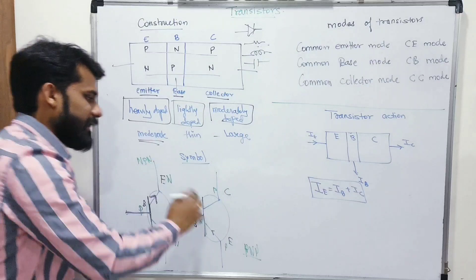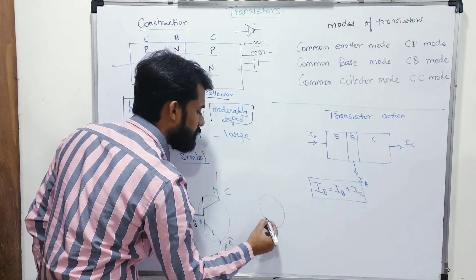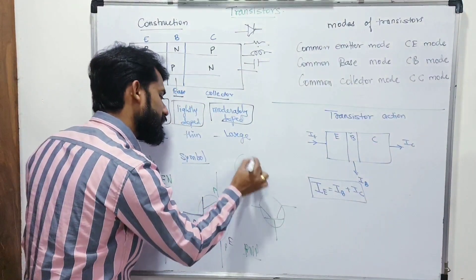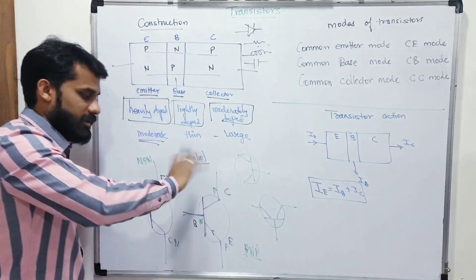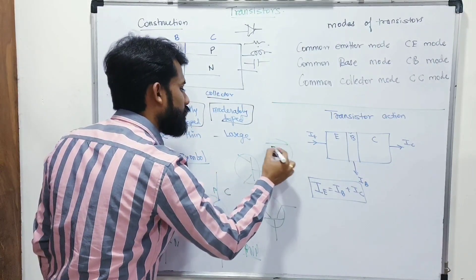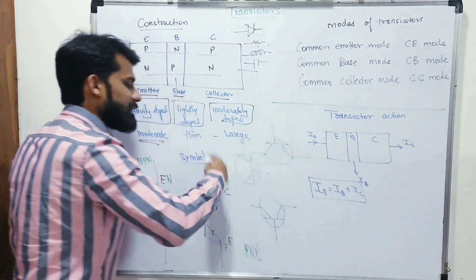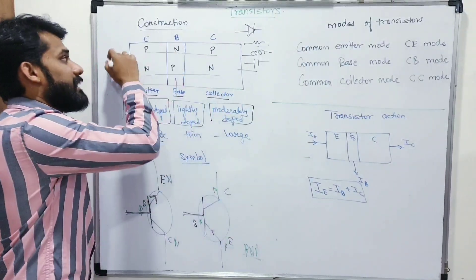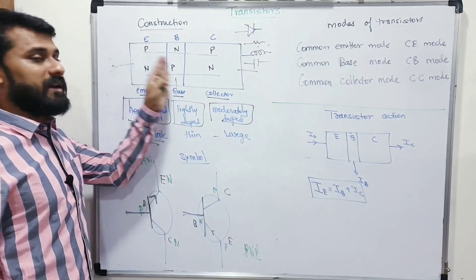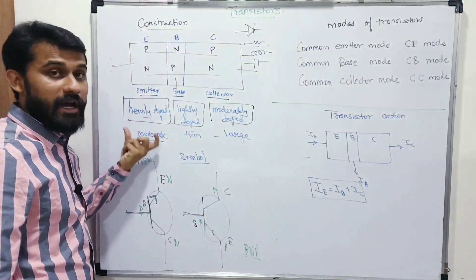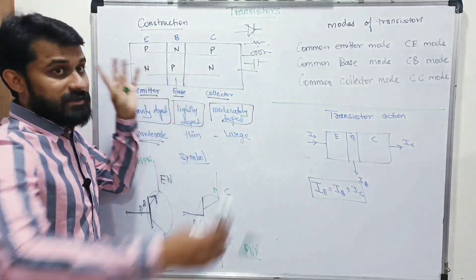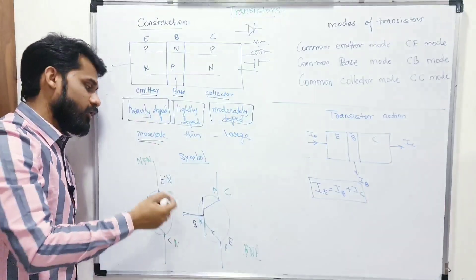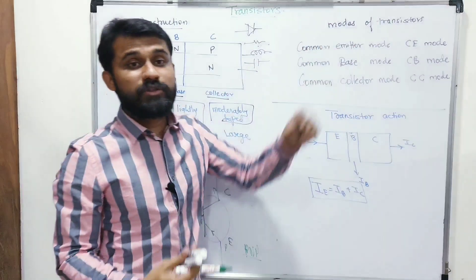Remember: the arrow is always on the emitter side. Sometimes the symbol is rotated in different orientations — all rotations are valid symbols of transistors. To summarize transistor construction: three parts — emitter (moderate size, heavily doped), base (very thin, lightly doped), and collector (large size, moderately doped). Two types: PNP and NPN.